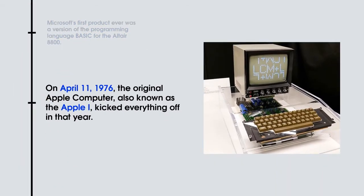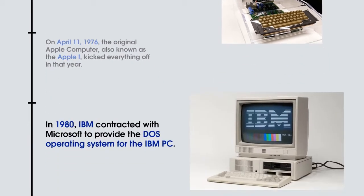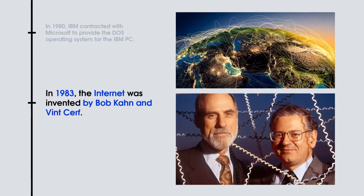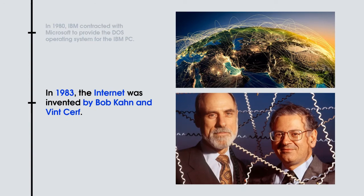On April 11, 1976, the original Apple computer, also known as the Apple I, kicked everything off. And in 1980, IBM contracted with Microsoft to provide the DOS operating system for the IBM PC.